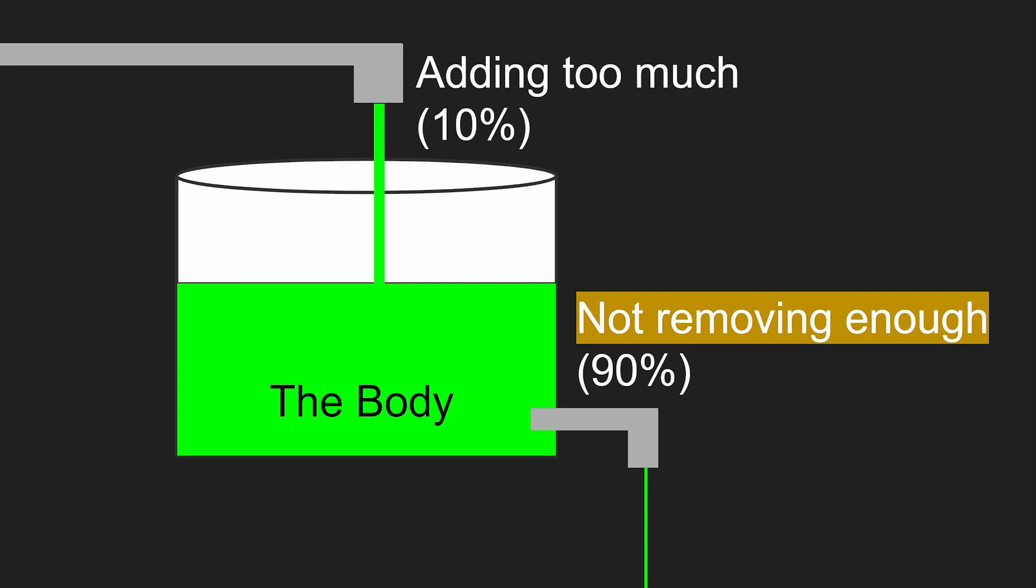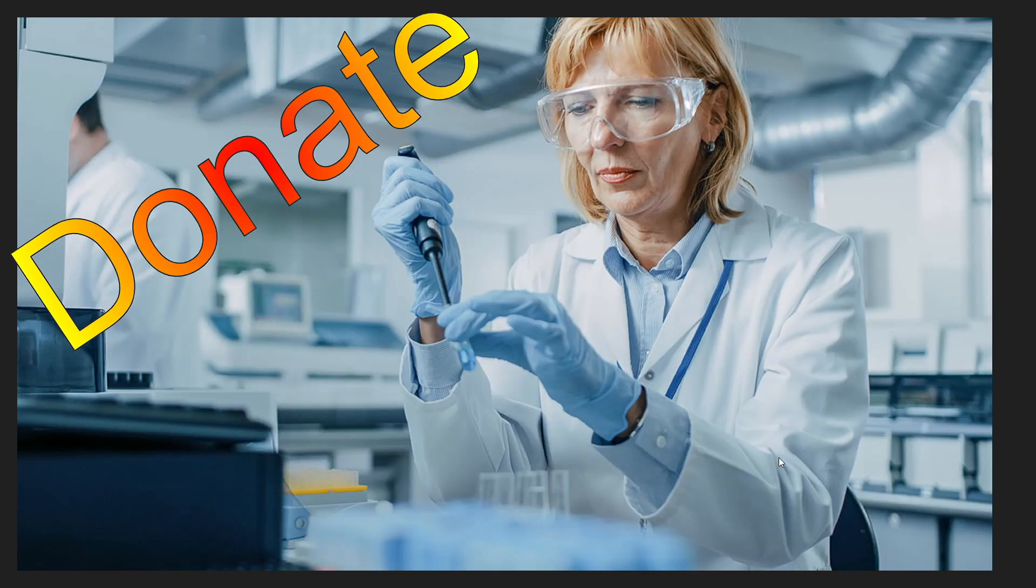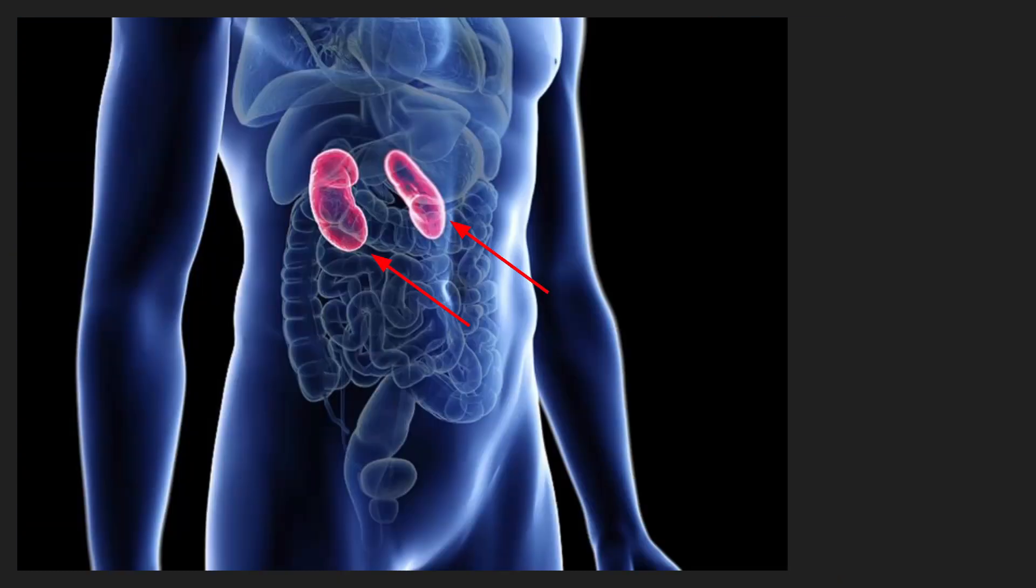Next, we'll cover the different ways that not enough is being removed. Real quick, unfortunately half the time there is not a known explanation for why a patient is not removing enough uric acid, and so donate to your local research center today. Anyway, we know that uric acid is removed from our body by our kidneys. Thus, if someone has kidney disease, their body will have a tougher time removing uric acid.